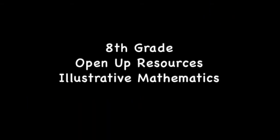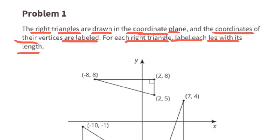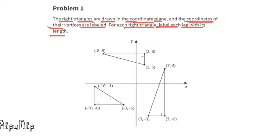Eighth grade Open Up Resources Illustrative Mathematics Unit 8 Lesson 11: Finding Distances in the Coordinate Plane, Problem 1. Right triangles are drawn in the coordinate plane and the coordinates of their vertices are labeled. For each right triangle, label each leg with its length. The side lengths of a right triangle that are called the legs make up the right triangle.